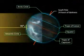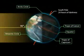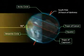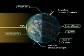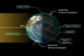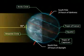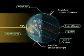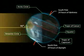There are 24 hours of darkness at the Arctic Circle, and 24 hours of daylight at the Antarctic Circle.